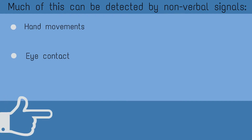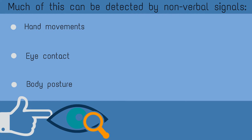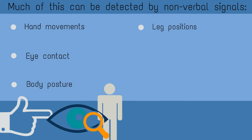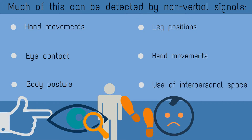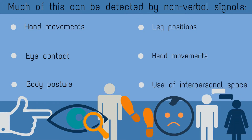Nonverbal signals to watch for include: hand movements, eye contact, body posture, leg positions, head movements, and use of interpersonal space.